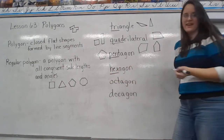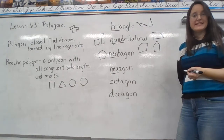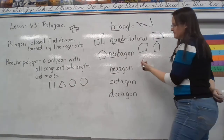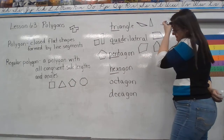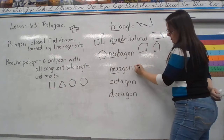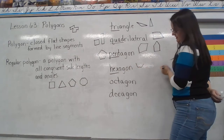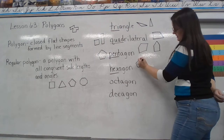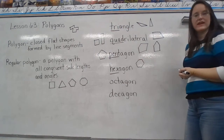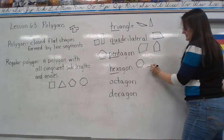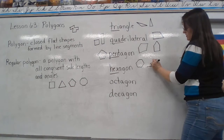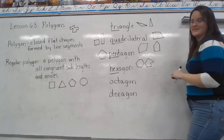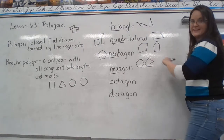Here we have hexagon. Hex means six. So a hexagon is a six-sided shape. A regular hexagon, or any six-sided shape — that could be a hexagon: a closed, flat, six-sided shape.